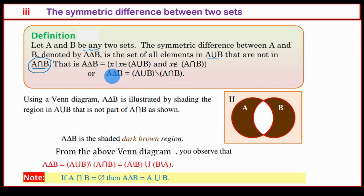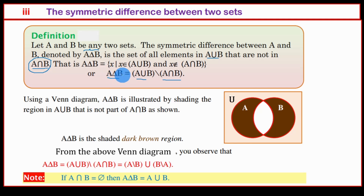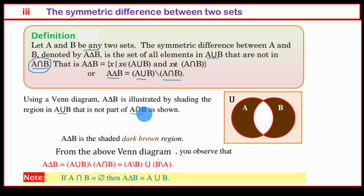A delta B is equal to A union B minus A intersection B. Now let's illustrate this using a Venn diagram. In the Venn diagram, A delta B is illustrated by shading the regions of A union B that are not part of A intersection B.